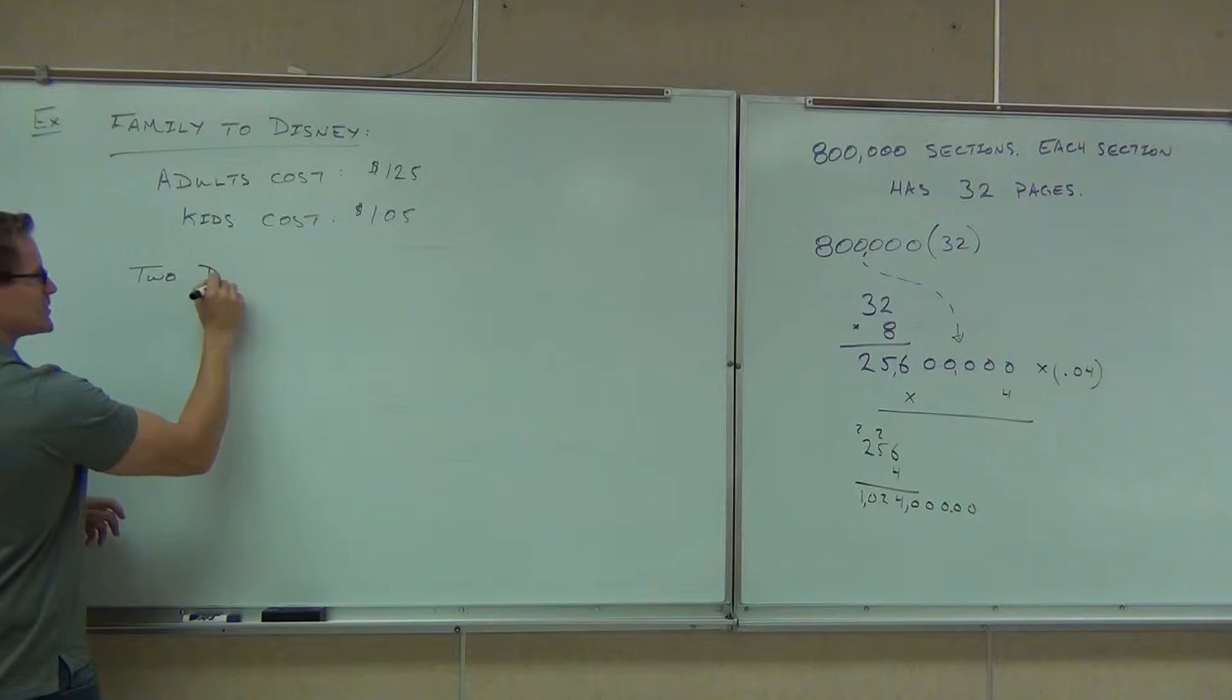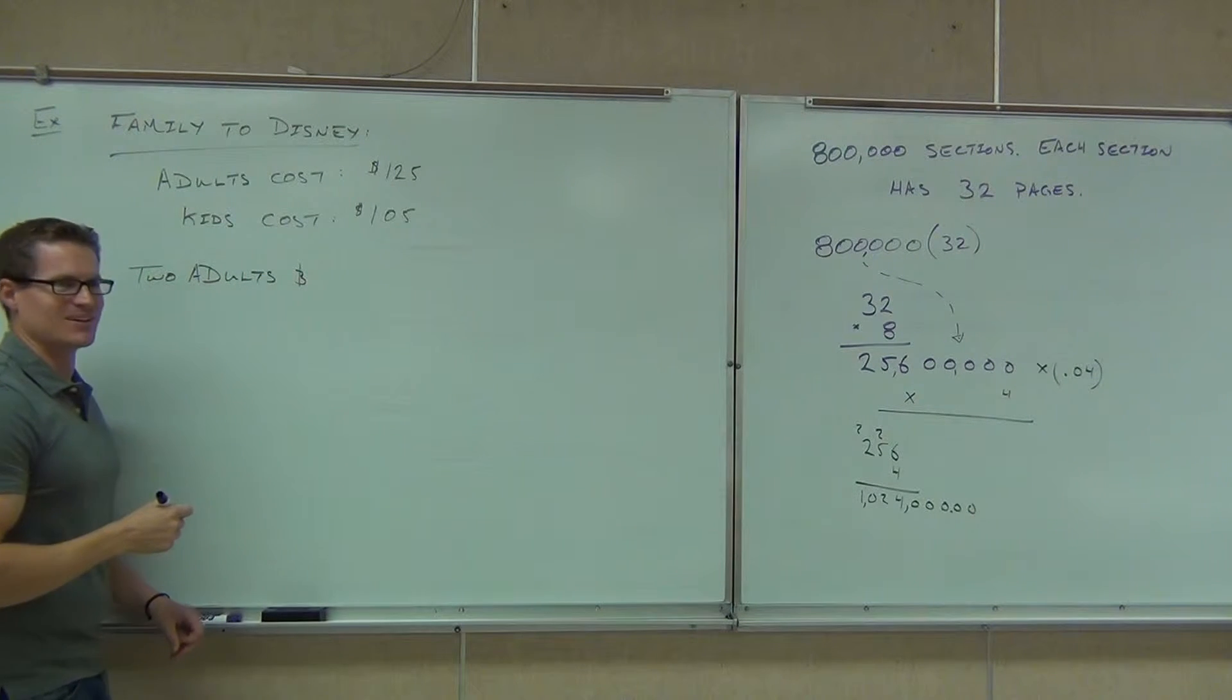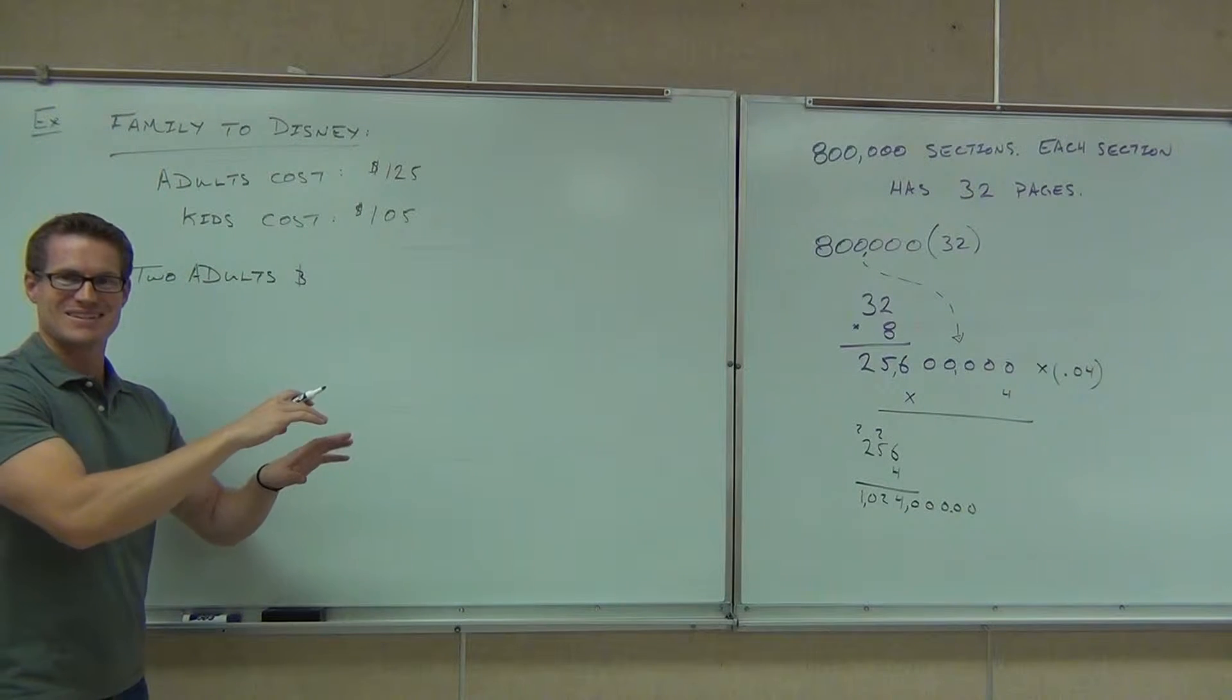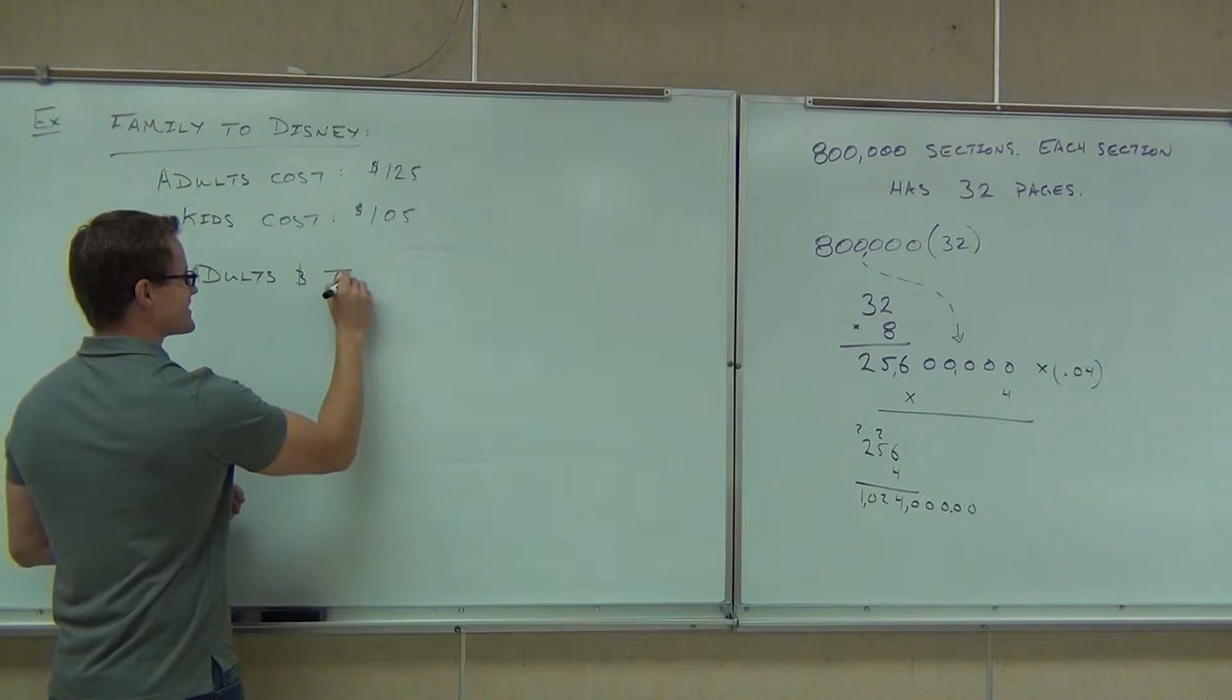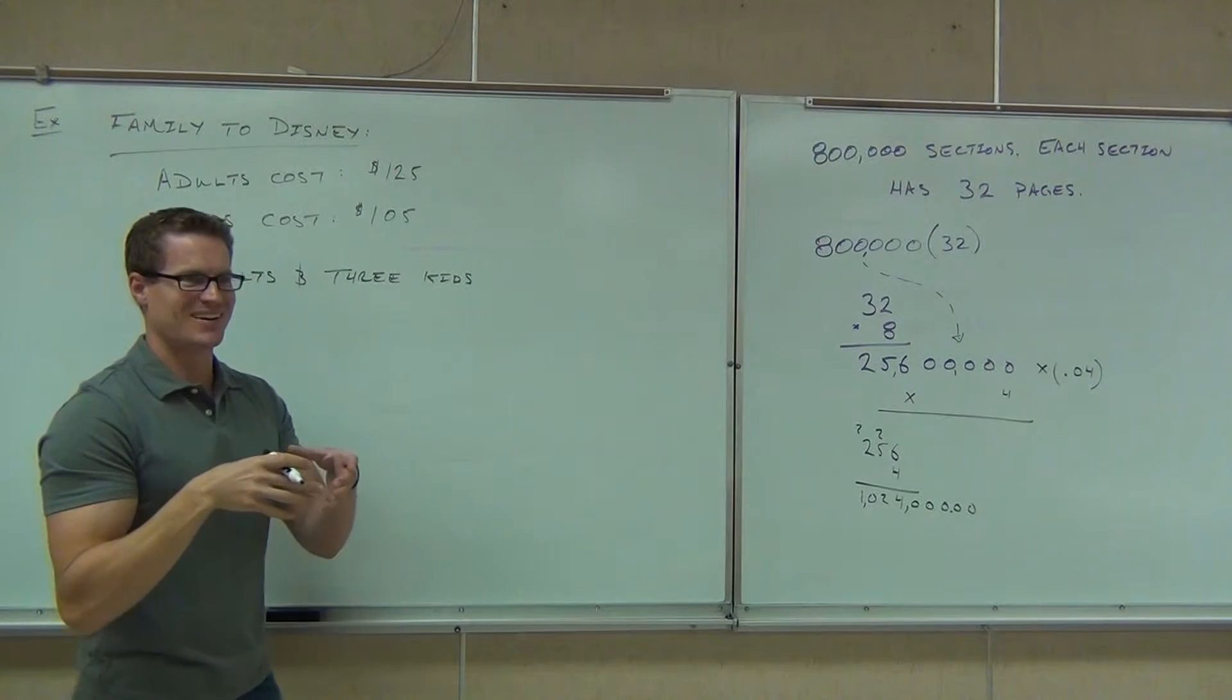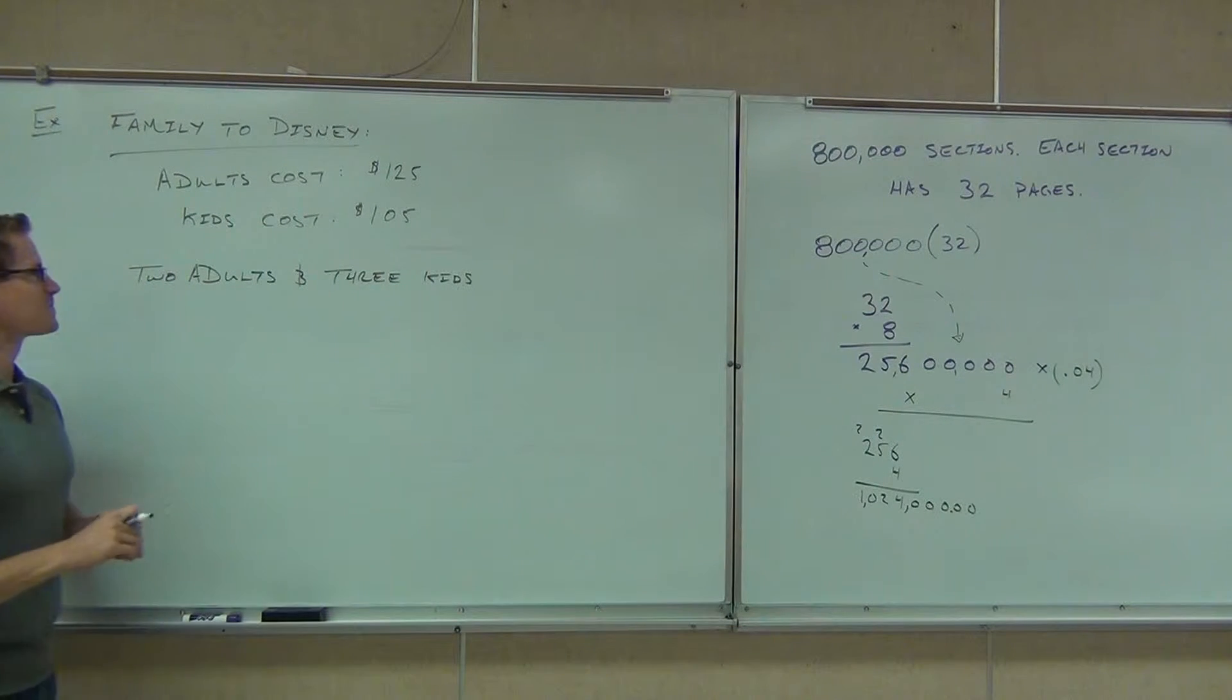So you've got two adults. Those churros though, they're good. You've got to pay for the food. It's like $30. This is without food, right? Yeah, this is just to get in the door. And three kids. $3.75 for a bottle of water. $10 for a little bitty burger. You need 13 of them. Food's expensive. It's good though. Okay, so we have two adults and we have three kids.